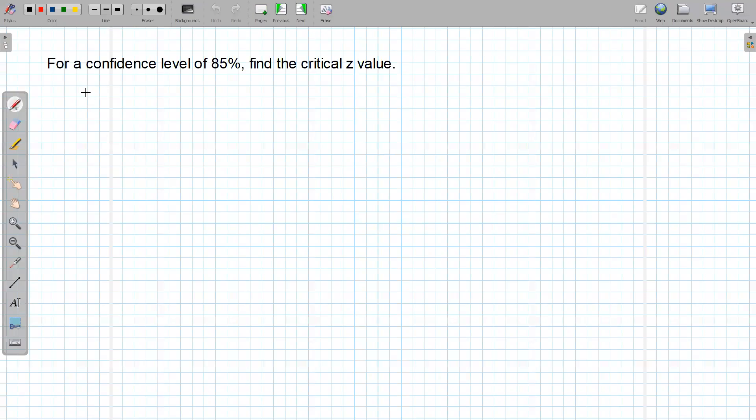So I want to find, for a confidence level of 85%, what's the critical z-value? What the heck does that mean?